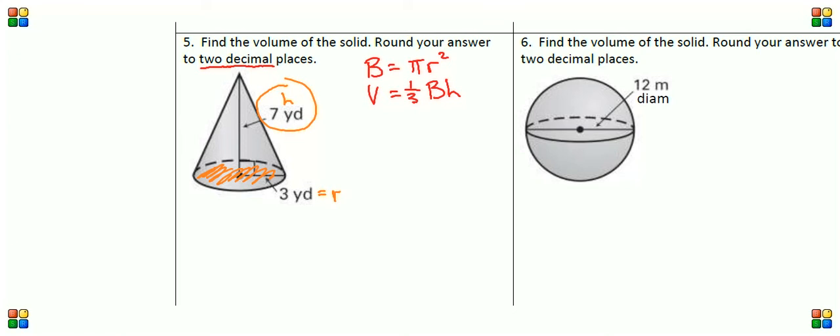Let's go ahead and do our calculations. The area of the base is equal to pi r squared, which is pi times 3 squared, which is equal to 9 pi.